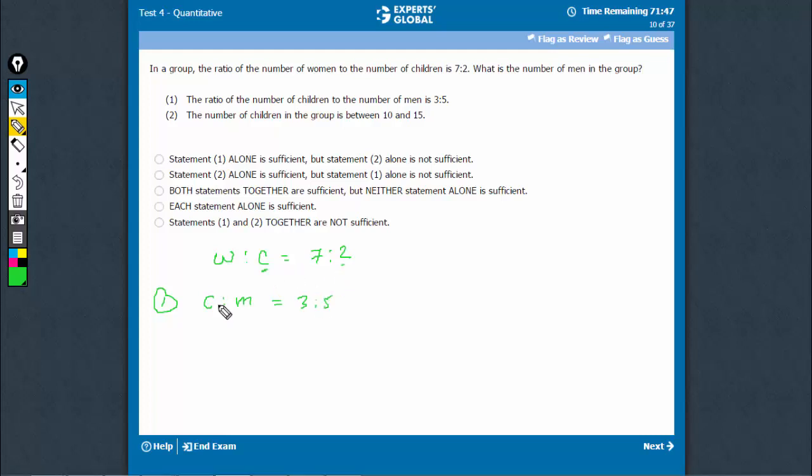To find a common ratio, the C's in the two terms have to be the same. The C is 2 here, the C is 3 here. So, let's make this 6 by multiplying each term by 3, this becomes 21 to 6 and let's multiply both the terms by 2 to get 6 here also, this becomes 6 to 10. So, the common ratio is 21 to 6 to 10.